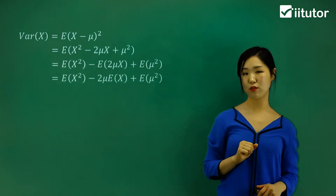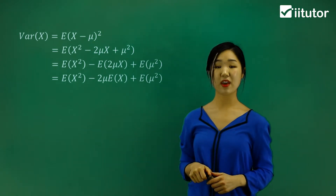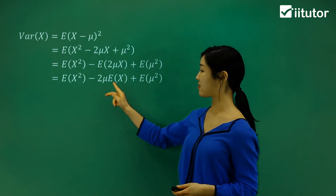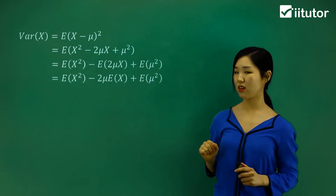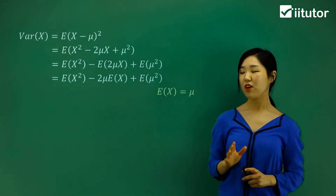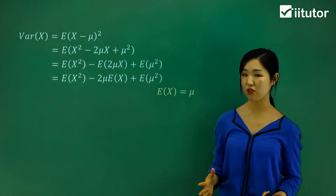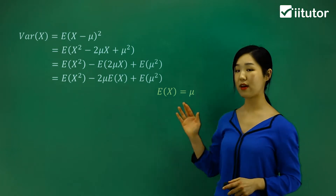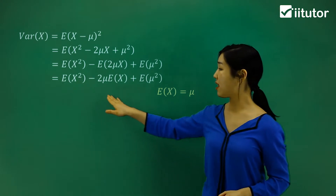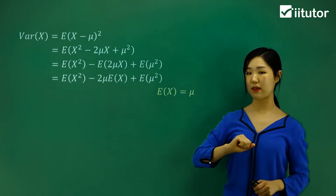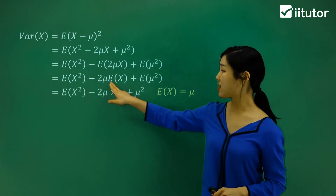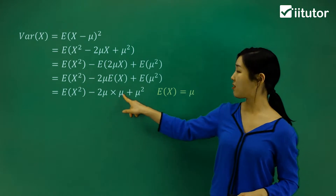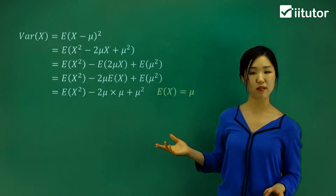I'm going to simplify this a little further. Using my expectation rules, I've taken out the constant 2 mu from the expected value, so it becomes 2 mu times the expected value of X. You should remember that mu is the mean, the average, and we can ultimately call that our expected value. The expected value of X is always equivalent to mu. So I've replaced the expected value of X with mu, and I've also changed the expected value of mu squared to just mu squared.